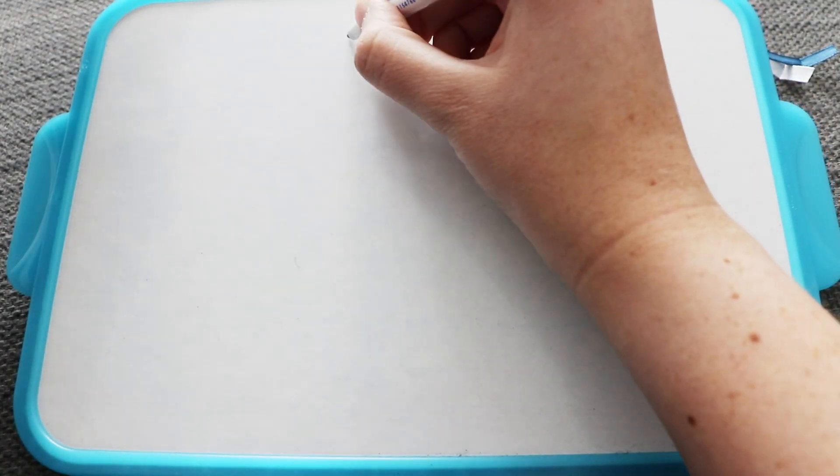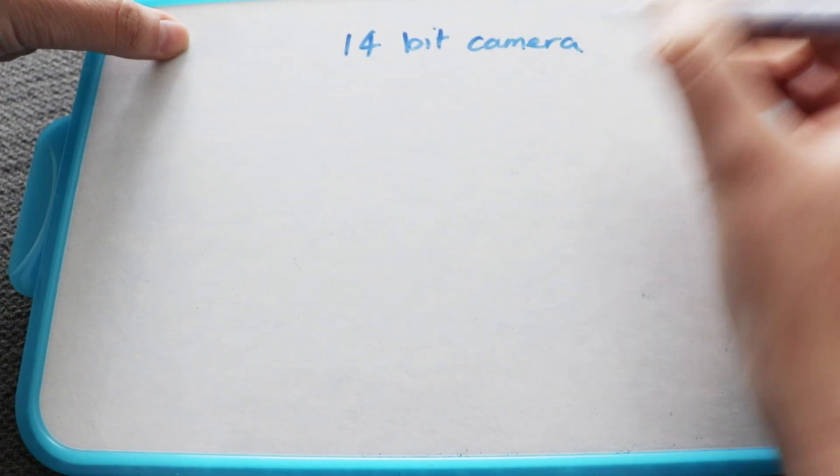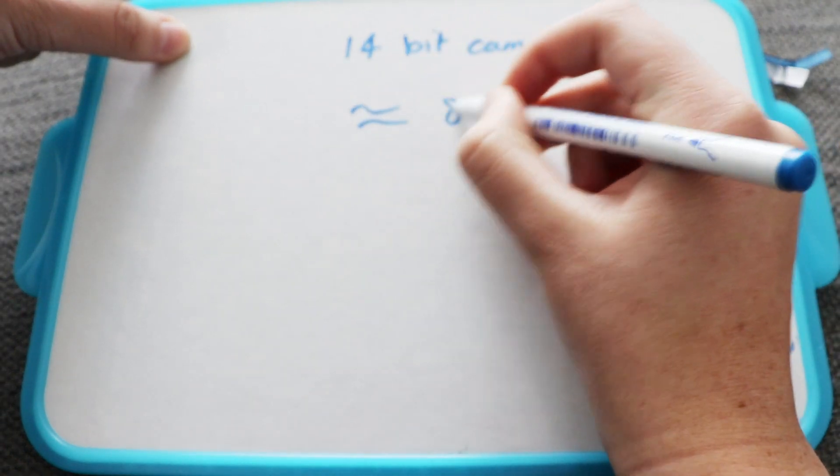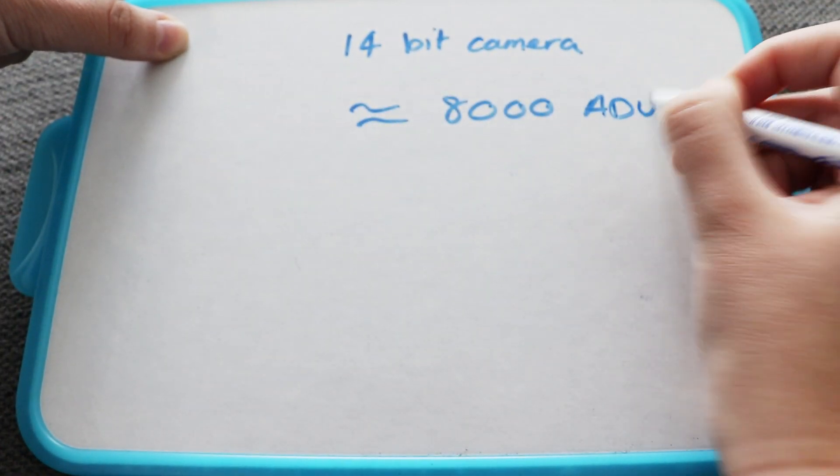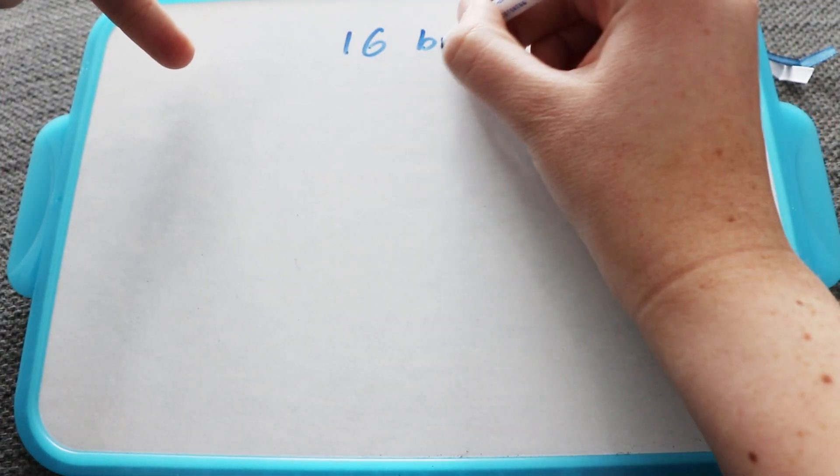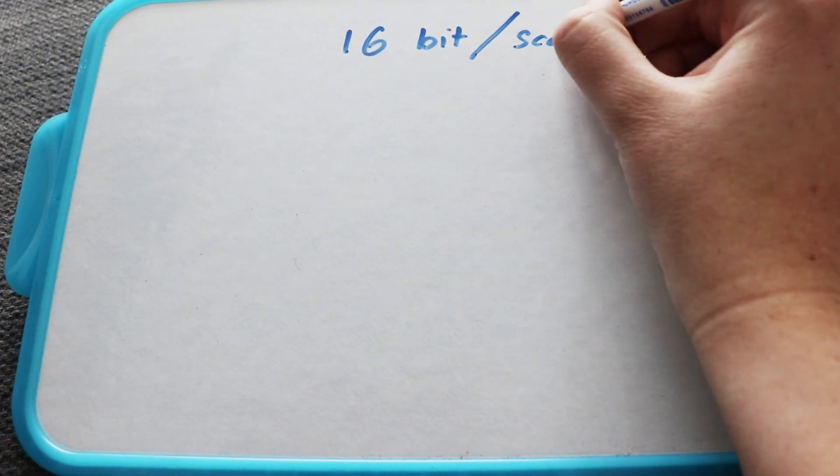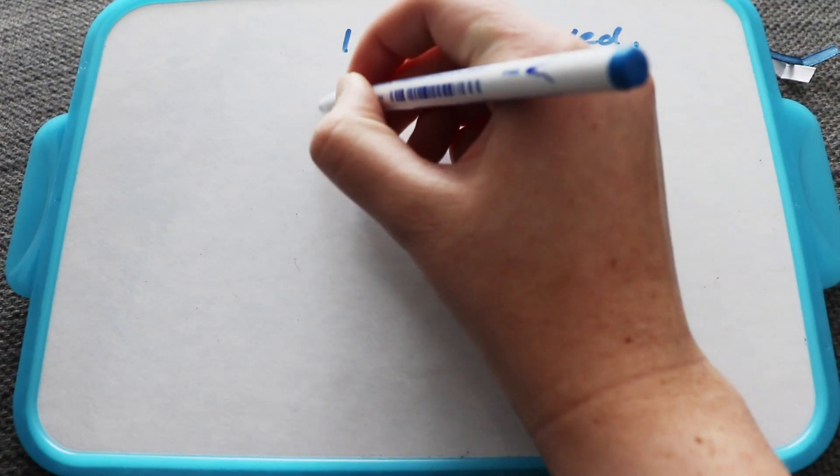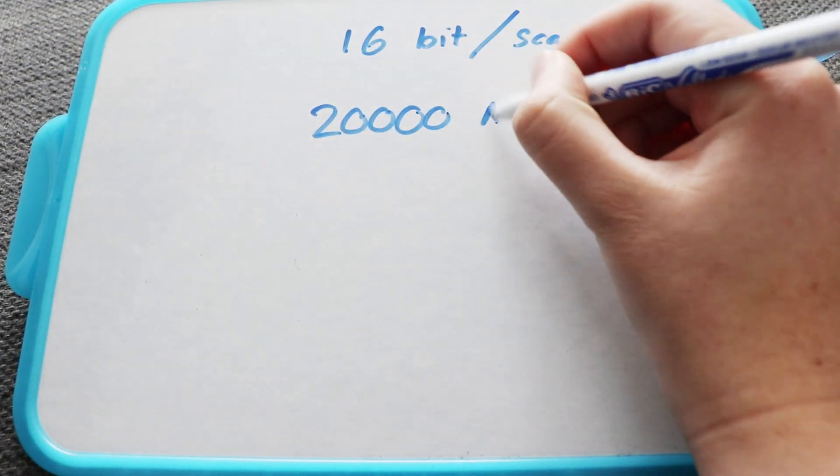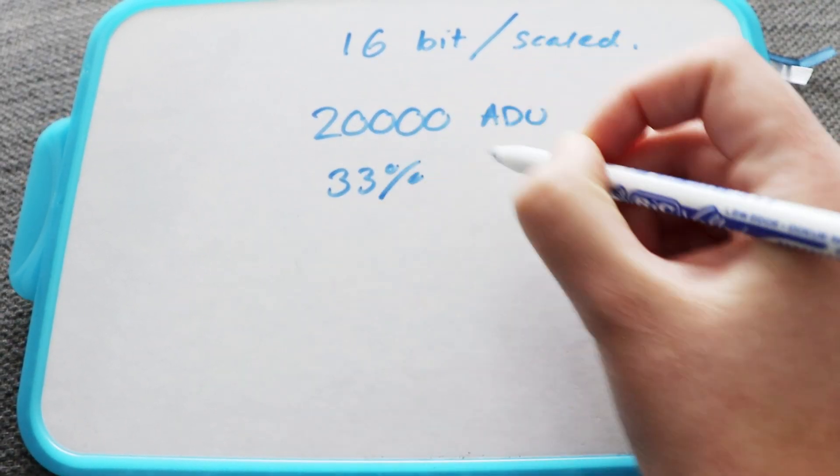So my 294, which is a 14 bit camera, I always aim for approximately 8000 ADU. And these values have worked pretty well for me. So if I was using a 16 bit camera or if my values are being scaled...